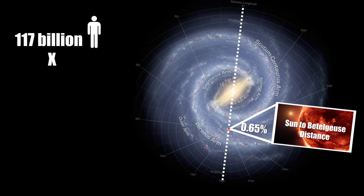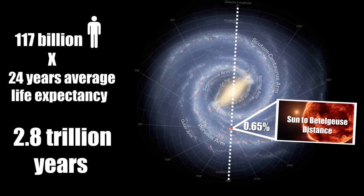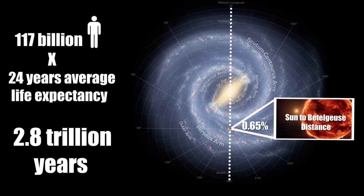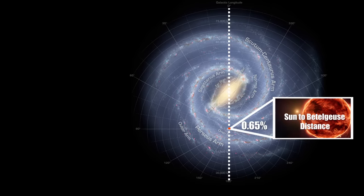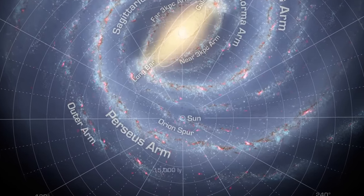Yet this staggering distance still represents less than 1% of our entire galaxy. In this thought experiment, it would take our species about 2.8 trillion years to journey across the space between the Sun and Betelgeuse. These numbers are way beyond what we're used to in everyday life, making it hard, if not impossible, for us to wrap our minds around them.